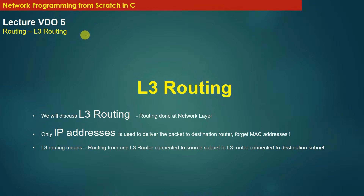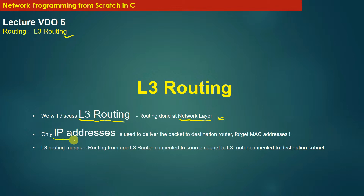Welcome back. In this module we will learn about Layer 3 routing, also called L3 routing. Layer 3 routing is routing done by the network layer of the TCP/IP stack. Always remember that L3 routing is all about routing done on the basis of IP addresses only. MAC addresses do not play any role in L3 routing — MAC addresses are restricted only to Layer 2 routing.